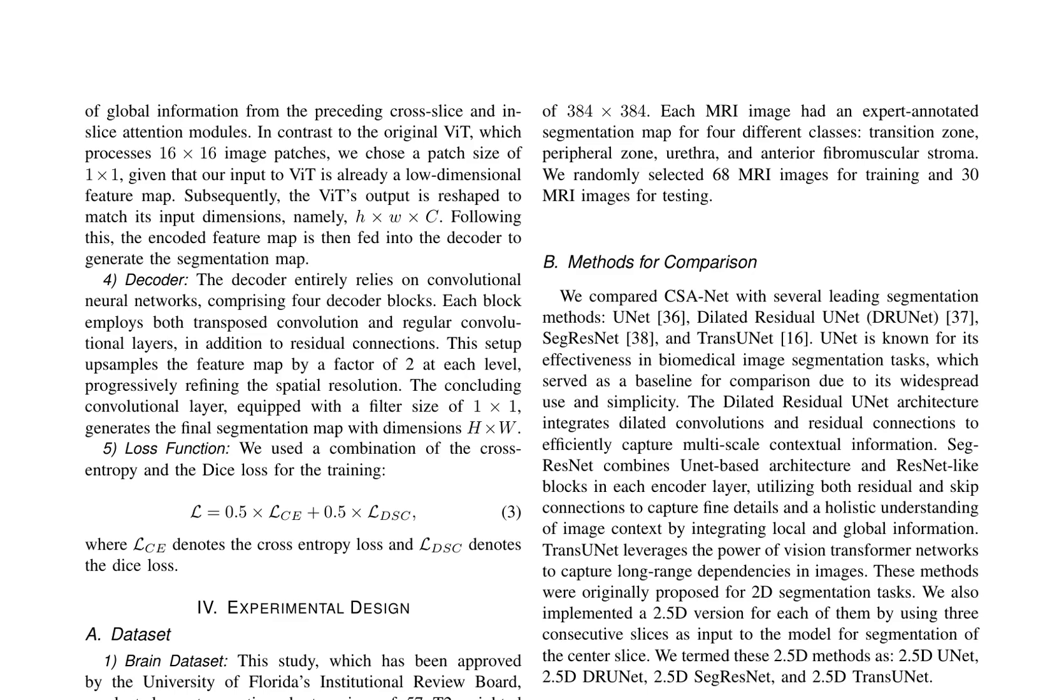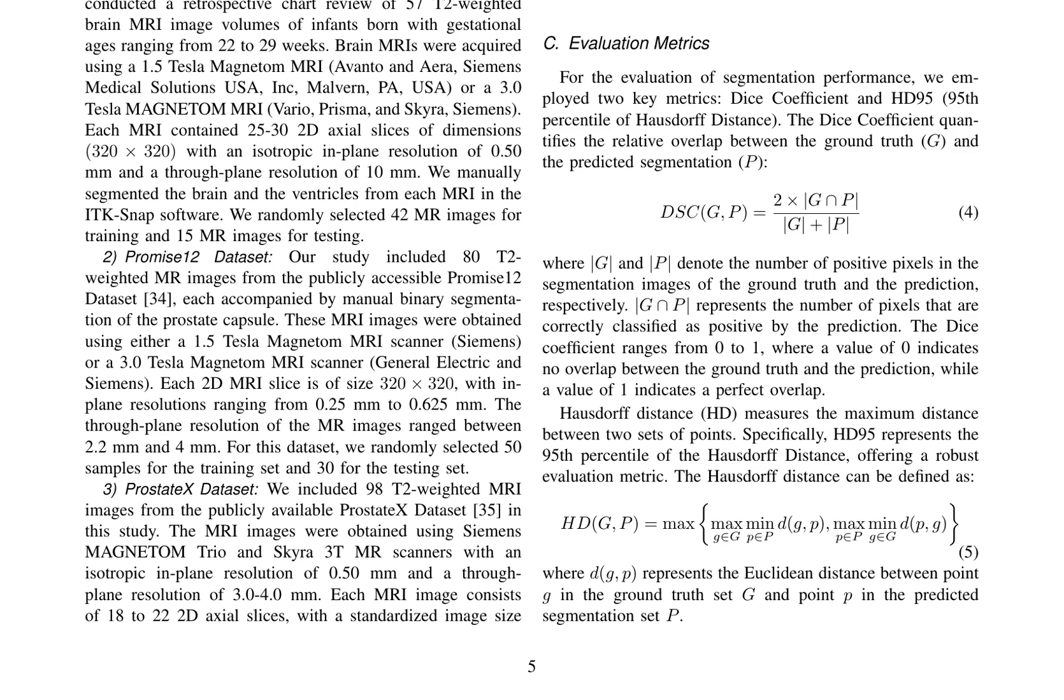The experimental design involves comparing CSA-NET with U-NET, Dilated Residual U-NET, SegResNet, and TransU-NET, in both 2D and 2.5D versions. The implementation details include resizing image slices to 256×256 pixels, normalizing pixel intensities, applying data augmentation techniques, and training the models for 50 epochs using the Adam optimizer.